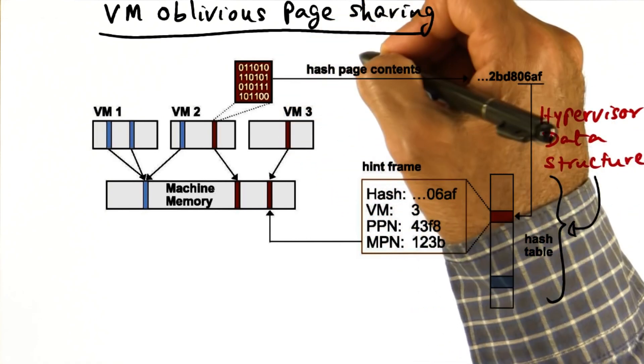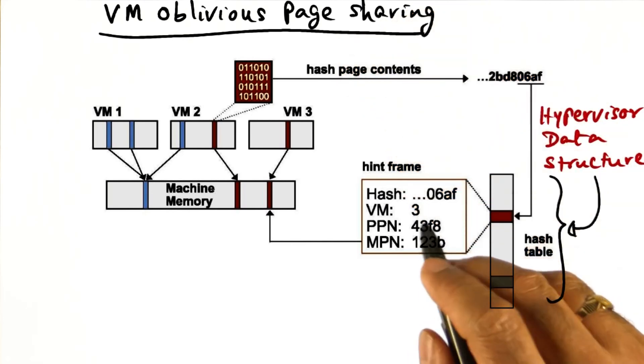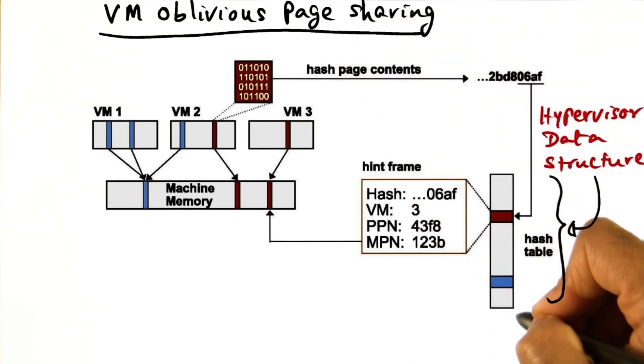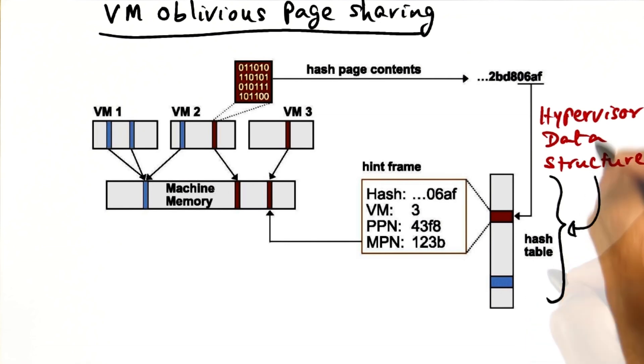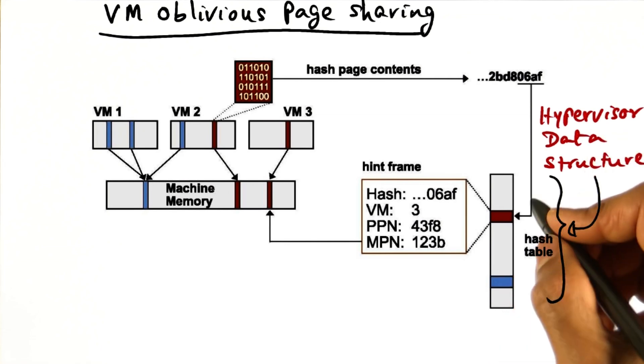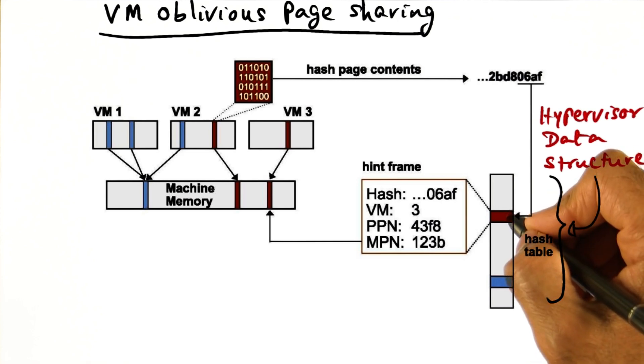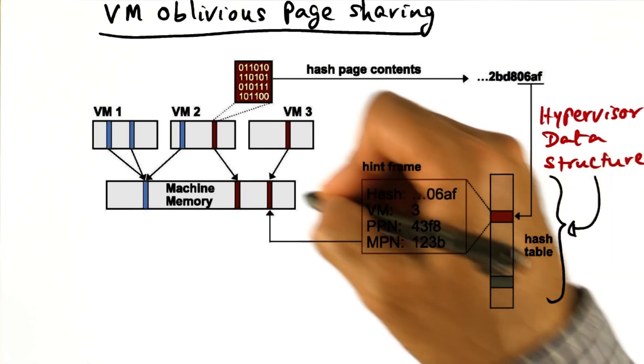The idea is to use content-based sharing. In order to support that, VMware has a data structure, which is a hash table kept in the hypervisor. This hash table data structure contains a content hash of the machine pages.